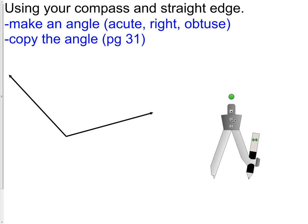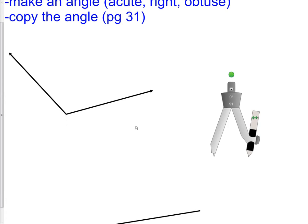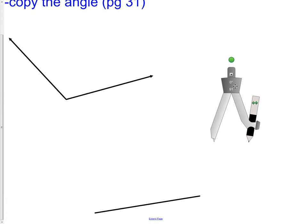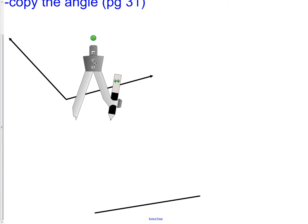You could find it back in lesson one or in chapter one. So here we go. Let's copy an angle. We can copy any angle if it's obtuse, right, or acute.